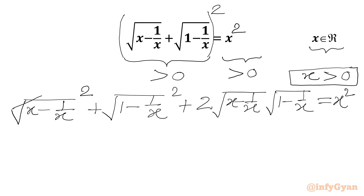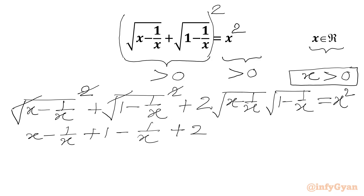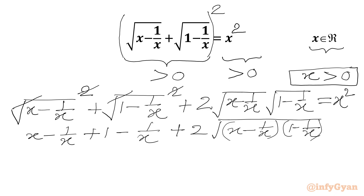Now square root and square will cancel out from LHS. We will write: x − 1/x + 1 − 1/x + 2 times square root of (x − 1/x) times (1 − 1/x) equal to x².